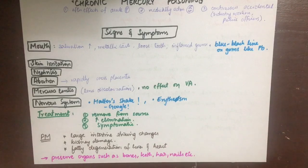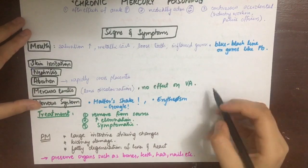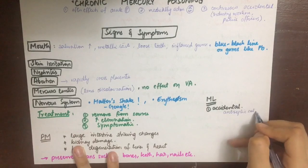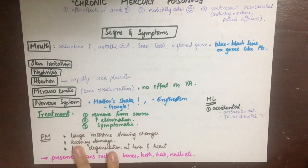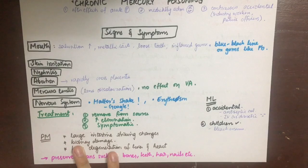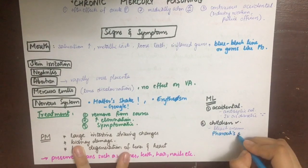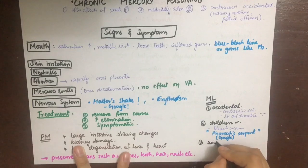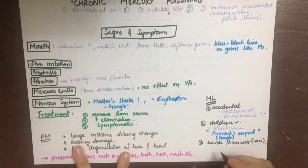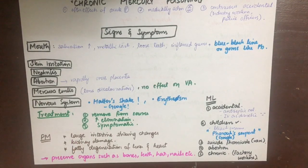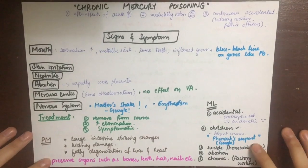The medico-legal importance of mercury poisoning: both chronic and acute cases can be accidental, due to antiseptic solutions or their historical use as diuretics. Children can be poisoned when handling bleach creams. When mercury thiocyanate is ignited, an effect known as the pharaoh's serpent is produced. The use of mercury in suicide and homicide is rare. It can cause abortion and chronically can be the cause of poisoning in factory workers.